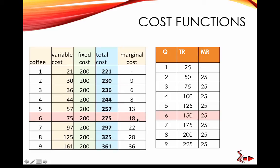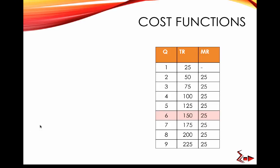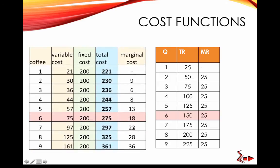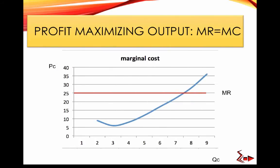For the seventh cup, marginal cost is $22 and marginal revenue is $25 — still profitable, so you produce it. For the eighth cup, marginal cost is $28 but revenue is only $25 — the cost exceeds the revenue, so you do not produce the eighth cup. The rule for deciding how much to produce is where marginal revenue equals marginal cost.